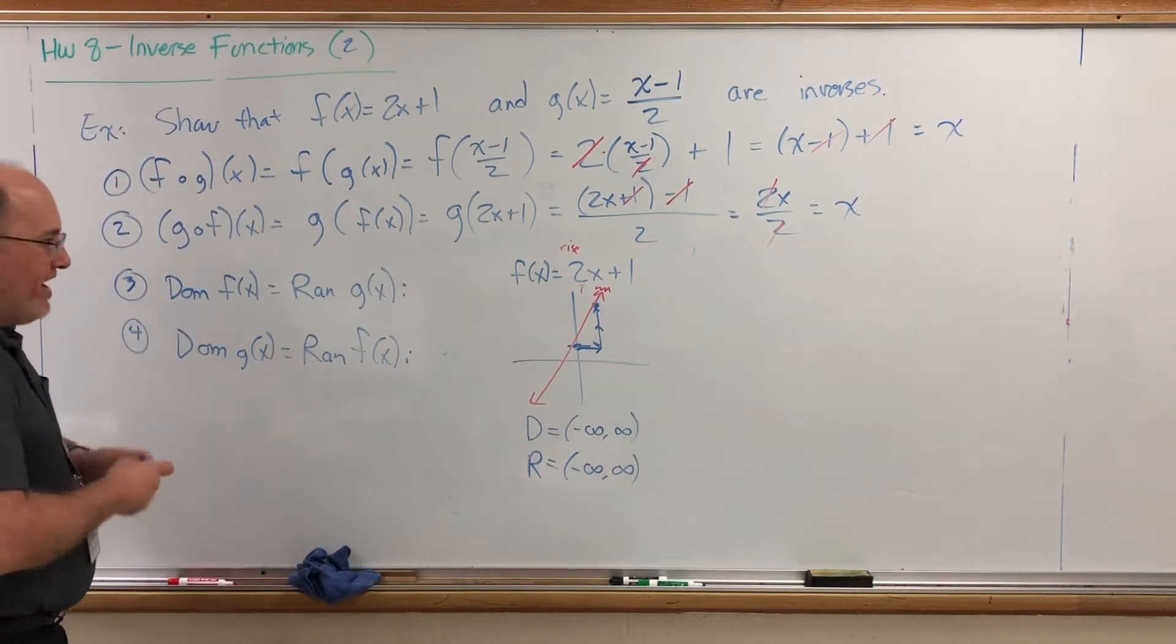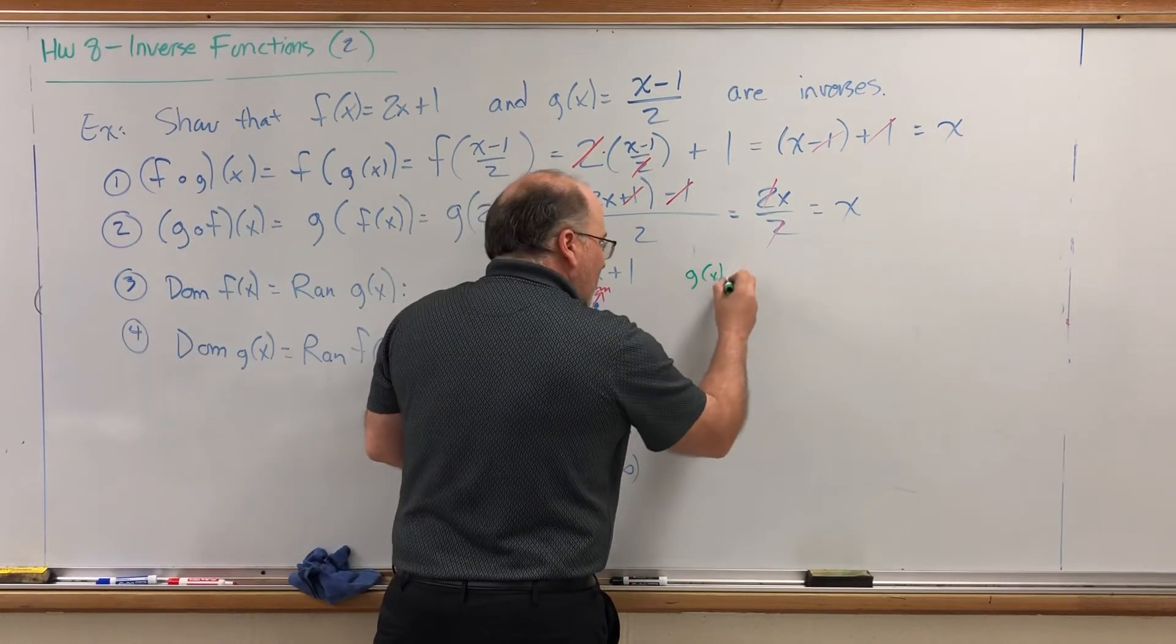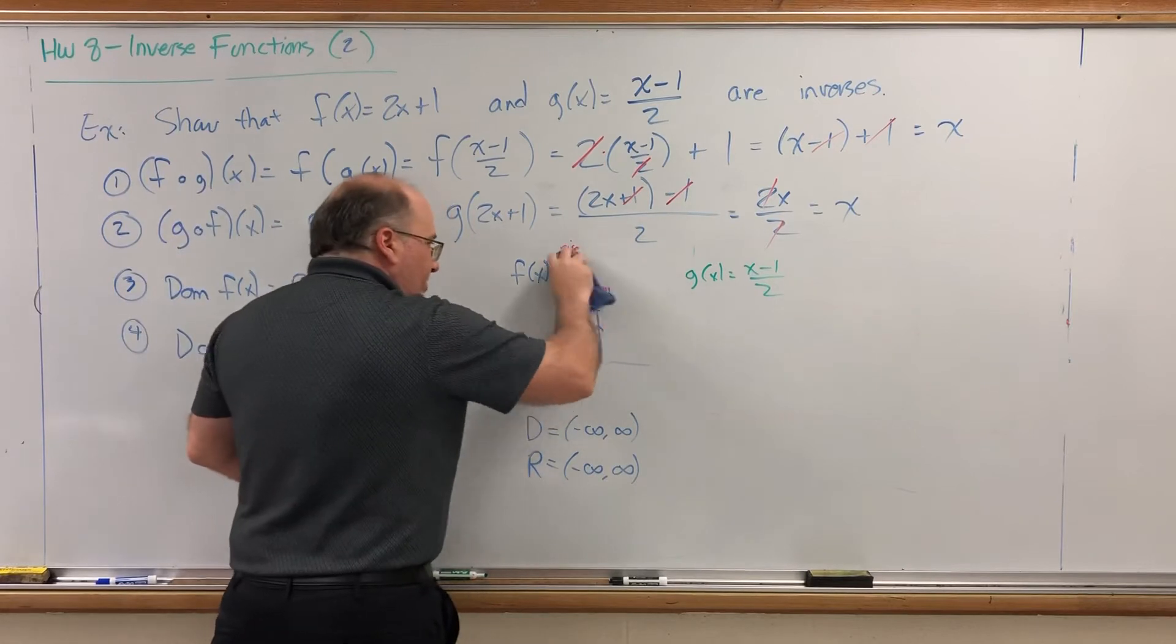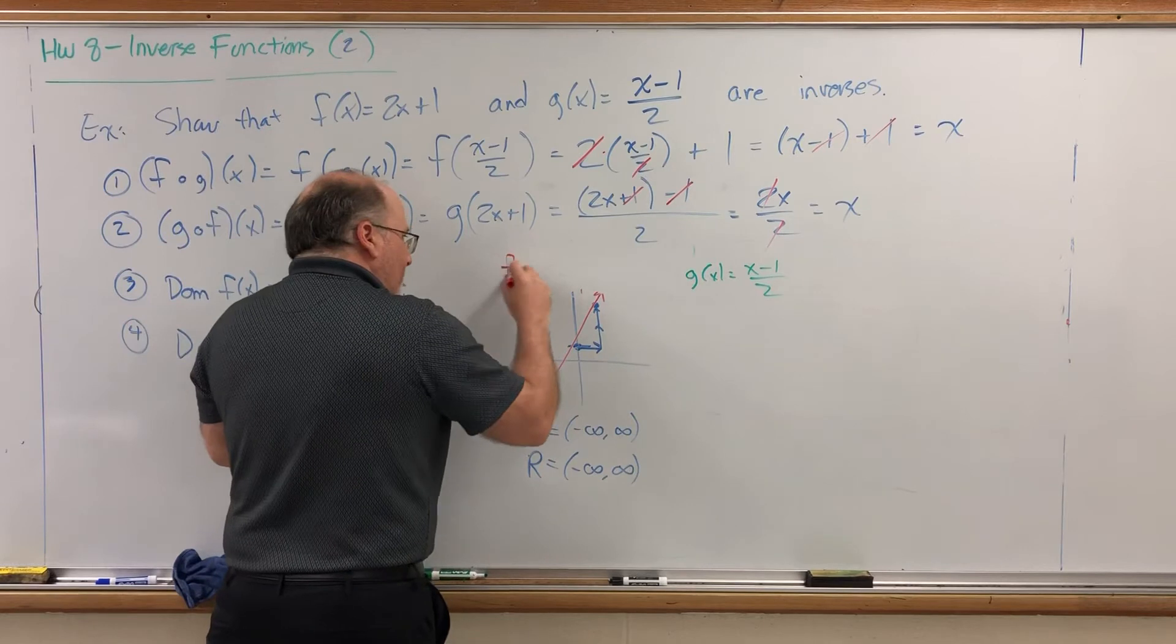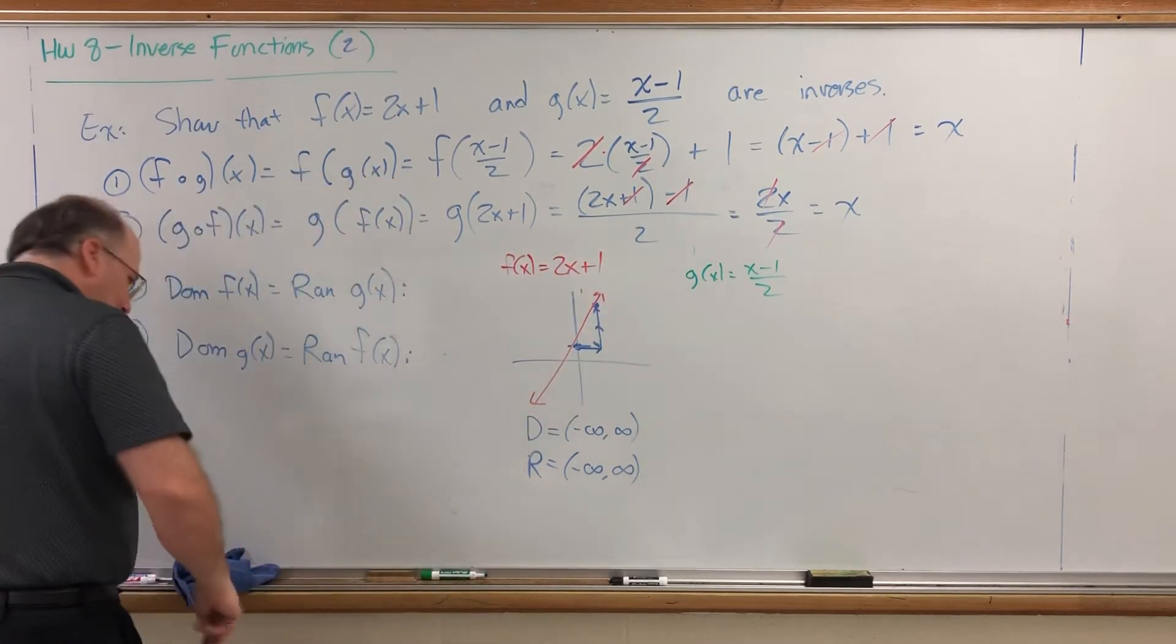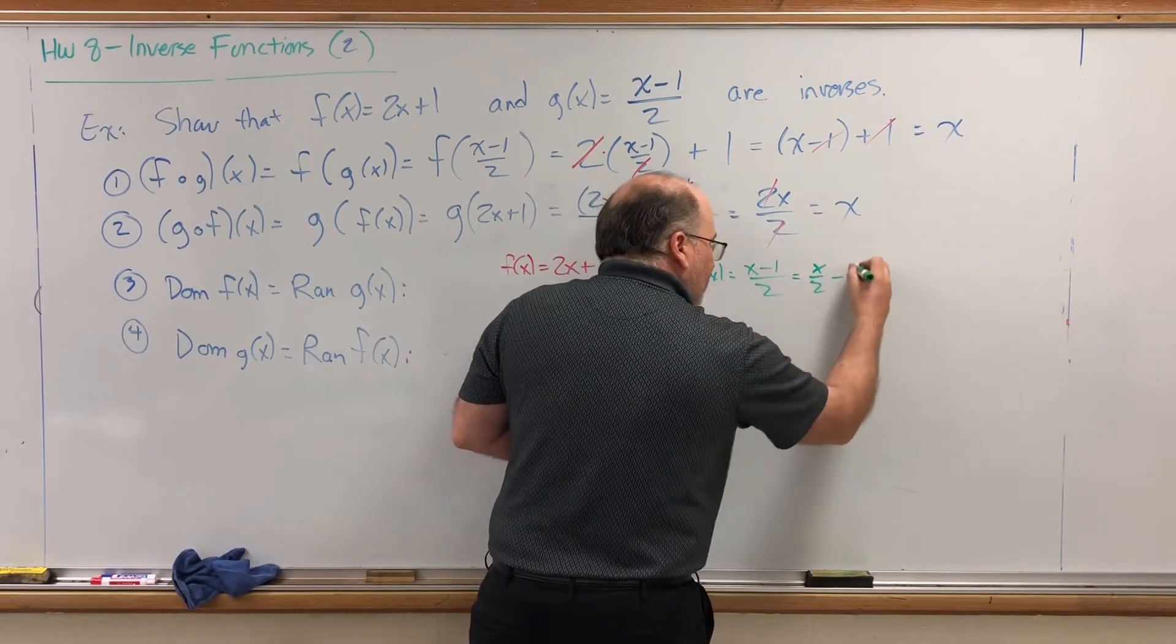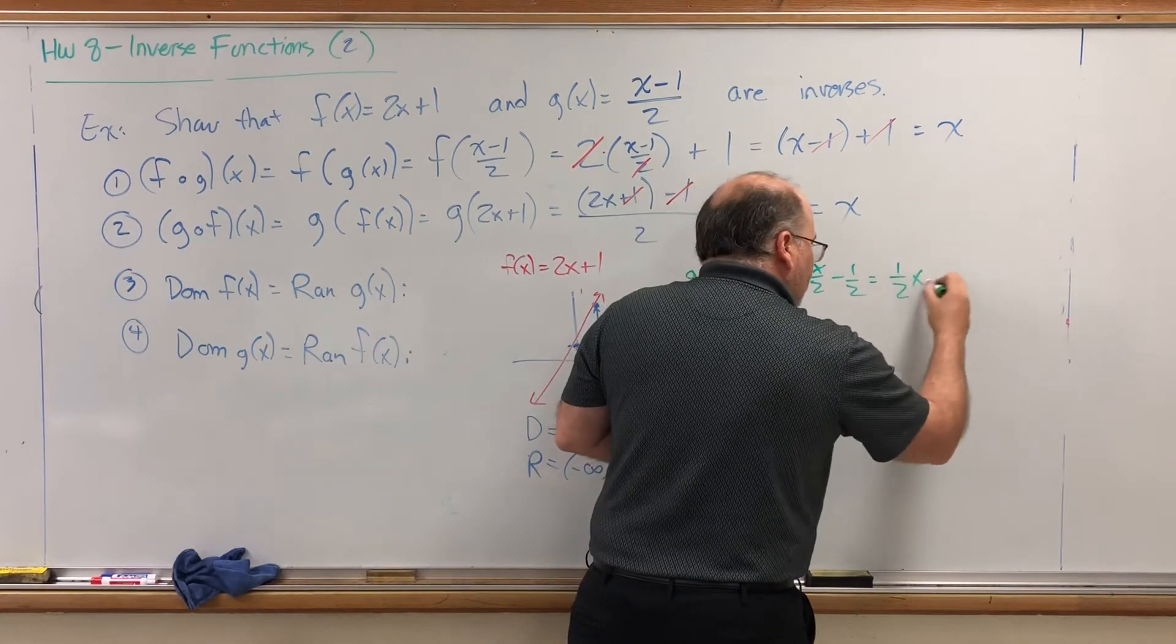But what about the other graph of g of x? We'll do that one in green. Equals x minus 1 over 2. That doesn't look like it's in slope-intercept form. But the truth is, I can make it in slope-intercept form. I just have to give it a little makeover. I'm rewriting the g function in red so it matches the red graph. How is this in slope-intercept form? Split it into two fractions. x over 2 minus 1 half. And then rewrite x over 2 as 1 half x minus 1 half.